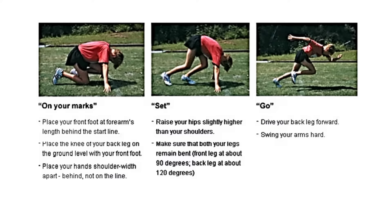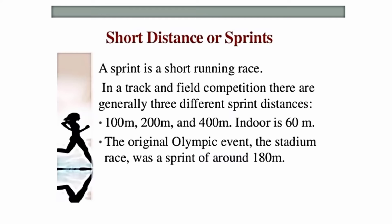You are familiar with the words 'on your marks,' 'set,' and 'go.' When we say 'on your marks,' you place your front foot four arm-lengths behind the start line, place the knee of your back leg on the ground level with your front foot, and place your hands shoulder-width apart behind the line. 'Set' is when you raise your hips slightly higher than your shoulders, with your front leg at about 90 degrees and back leg at about 120 degrees. When you hear 'go,' drive your back leg forward and swing your arms hard.